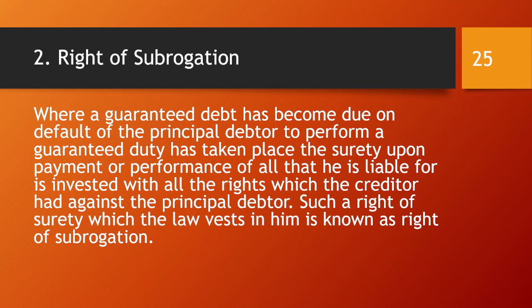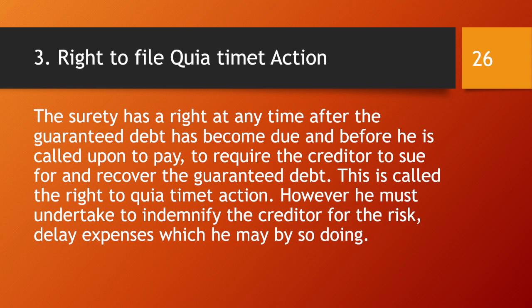The next right is the right of subrogation. Where a guaranteed debt has become due, or default of the principal debtor to perform a guaranteed duty has taken place, the surety upon payment or performance of all that he is liable for is invested with all the rights which the creditor has against the principal debtor. The same relationship that existed between the principal debtor and creditor now applies to the surety. This is known as the right of subrogation.